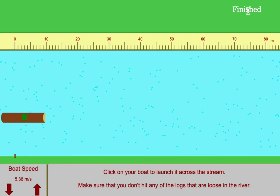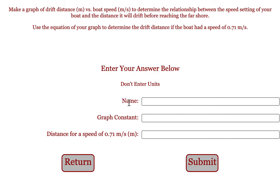When you're done, click on the finish button. Type in your name and the graph constant. You can see from up here you're graphing drift distance on the y-axis and boat speed on the x-axis.